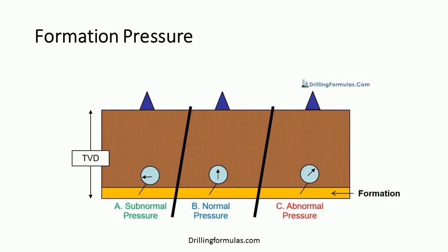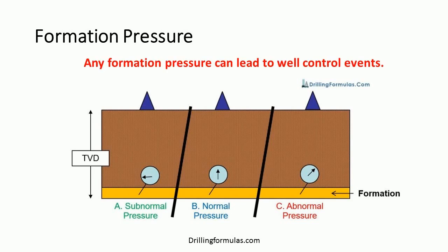The drawing below demonstrates the comparison of formation pressure when drilling into each pressure regime. At the same true vertical depth, subnormal pressure shows the least pressure in comparison to others, while abnormal pressure gives the highest pressure. Many people think that only abnormal pressure can lead to a well control incident. However, any formation pressure can cause the well to flow if the hydrostatic pressure is less than formation pressure. So always remember: any formation pressure can lead to well control events.